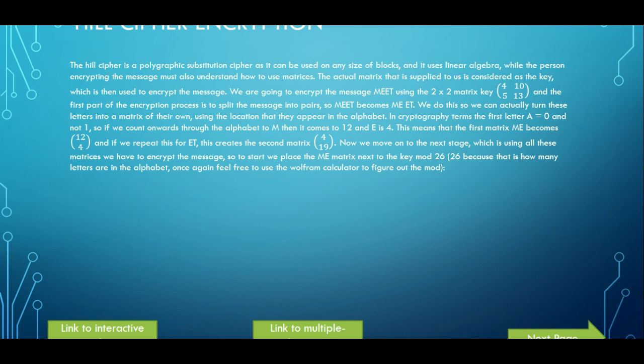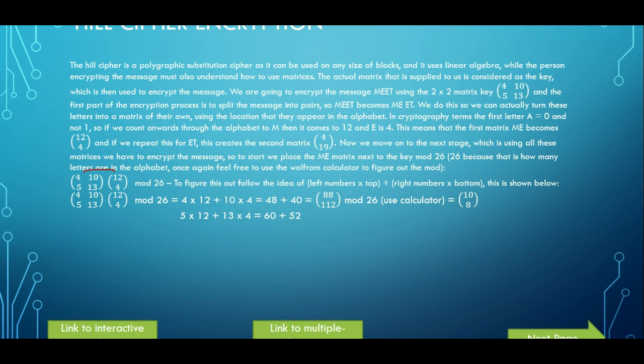Once again, you can feel free to use the Wolfram calculator to figure this out or if you have a calculator that does modulus, feel free to use that as well. So here we go, we put the key that's given to us next to our ME, mod 26. And to figure it out we need to multiply the left numbers with the top number and the right numbers at the bottom. So these two numbers multiply with this top one here and these two numbers, 10 and 13, multiply with the bottom one and we add them together.